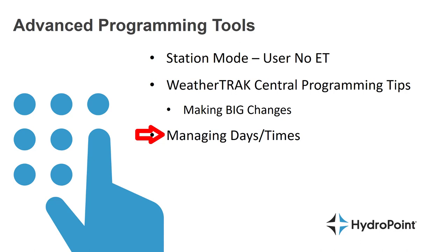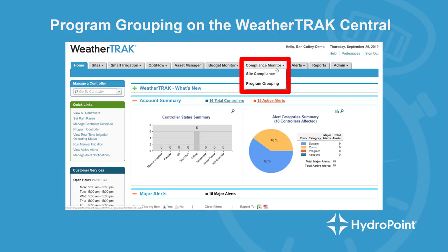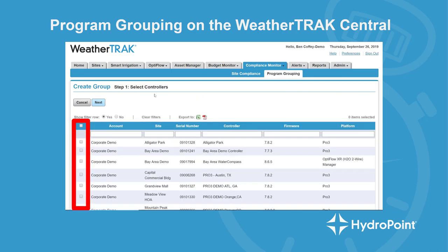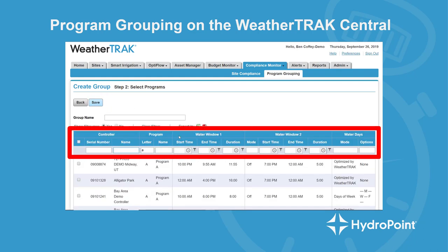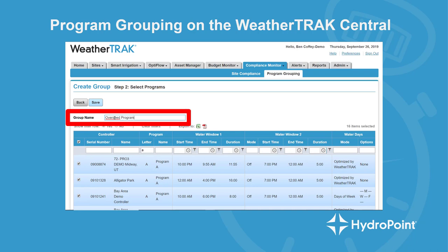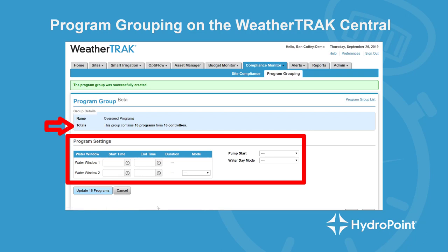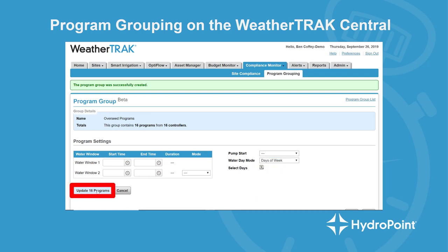Now that you're an expert at managing days and times, check out the WeatherTrack features that allow you to make big changes to your days and times features. For that, you'll need to check out your compliance monitor — go to the compliance monitor tab and select the program grouping tool. Once that saves through, you'll be able to create a new program group from your controllers. Step one: select the controllers you want in your group. Then use the advanced sorting tools to create the group you would like. Once you have the programs you would like, select all of those programs, name the group, save the group. You'll then be able to update the program settings — start times, water windows, and water day mode — for all of the programs inside the group. Always hit save and send, or in this case update.